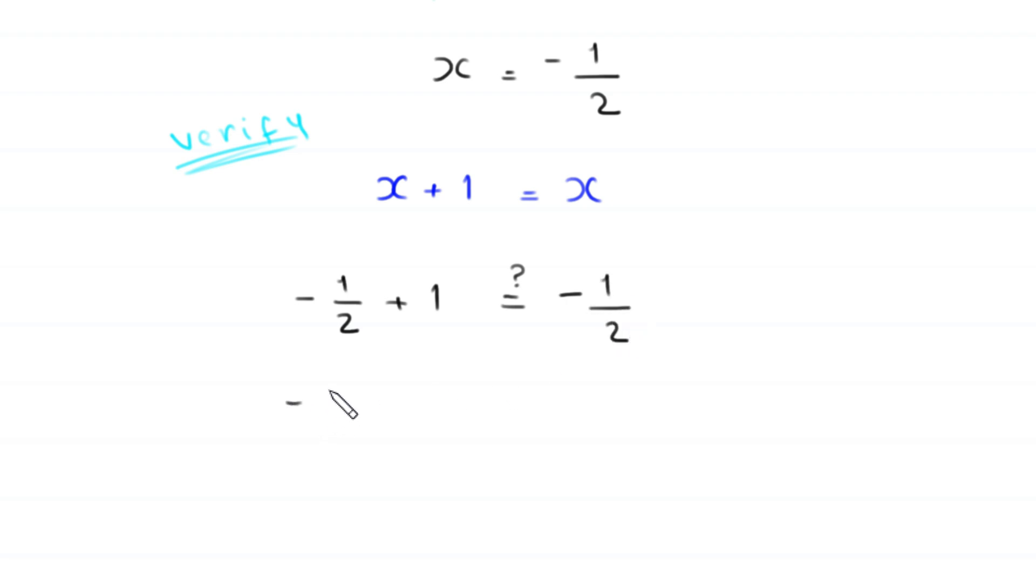Next, negative 1 over 2 plus this 1 can be written as 2 over 2. Is this equal to negative 1 over 2? Now, with the common denominator 2, this negative 1 plus this 2 gives us negative 1 plus 2 over 2. Is this equal to negative 1 over 2?